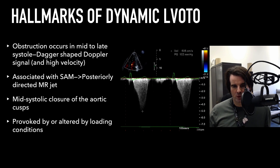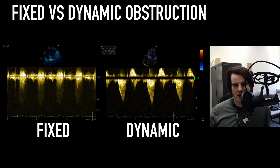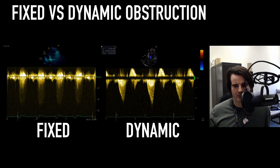This is associated with systolic anterior motion and a posteriorly directed eccentric mitral regurgitation jet, as the valve is pulled and leads to MR. As blood tries to escape, a significant pressure drop can lead to mid-systolic closure of the aortic cusps. This can all be provoked or altered by loading conditions. Comparing fixed versus dynamic obstruction: fixed obstruction produces a typical parabolic waveform where the level of obstruction remains constant during systole. With dynamic obstruction, there's progressive acceleration of velocities as blood tries to escape the ever-tightening outflow tract, with the major issue being a drop in stroke volume.